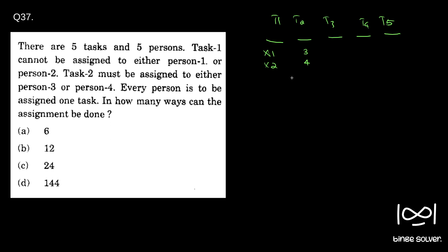This is a classic case where we use permutation and combination with restrictions. We'll fill in each position one by one, as we do for permutation questions. Since there's a requirement that person 3 or 4 must be assigned to T2, we'll fill that position first. We have two options to fill T2.